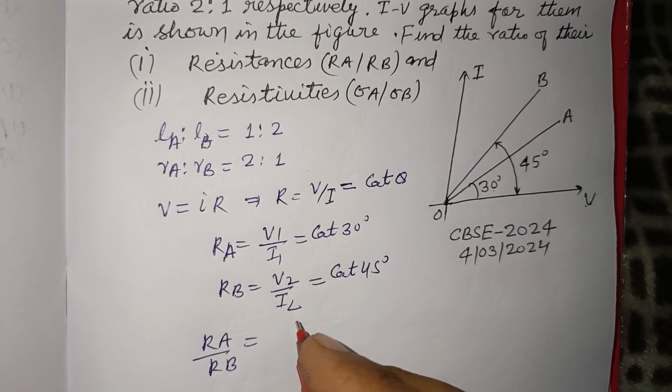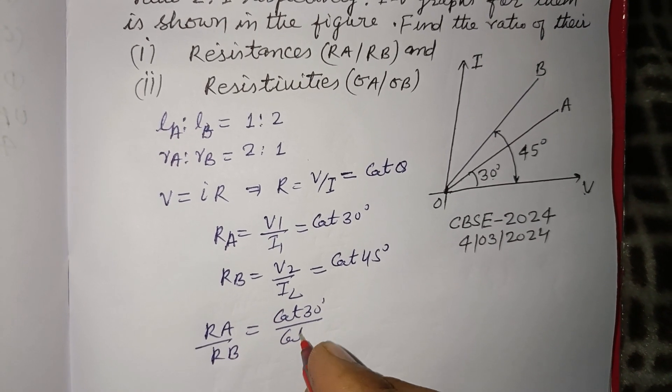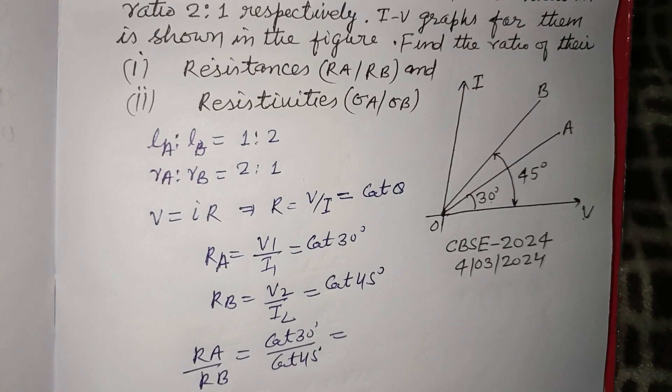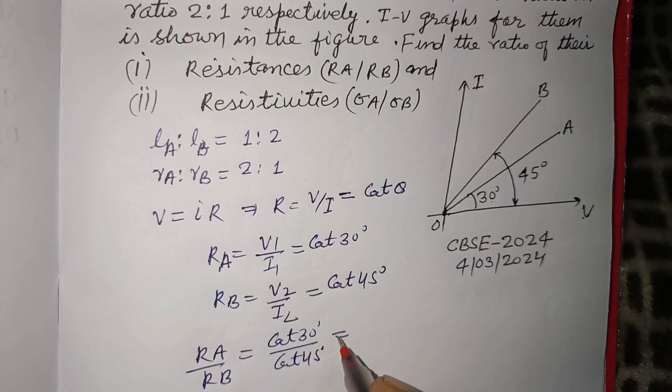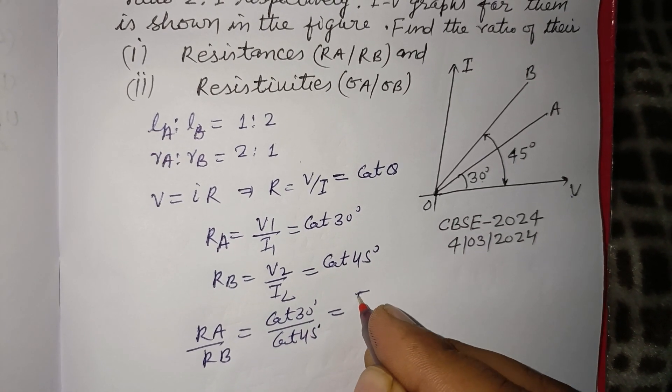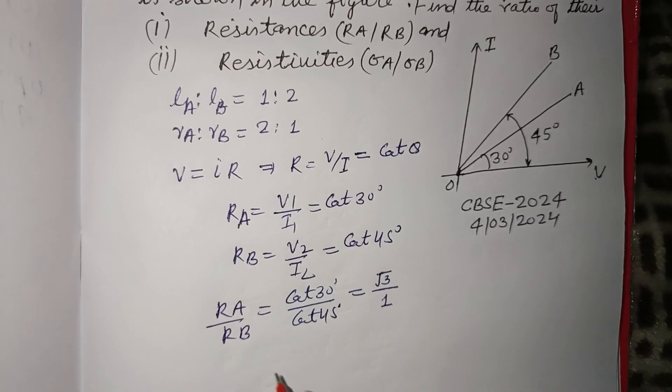Therefore RA/RB = cot 30°/cot 45°. Cot 30° is √3 and cot 45° is 1, so RA/RB = √3:1.